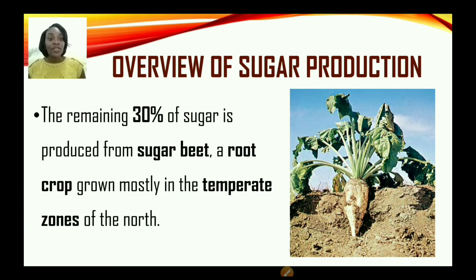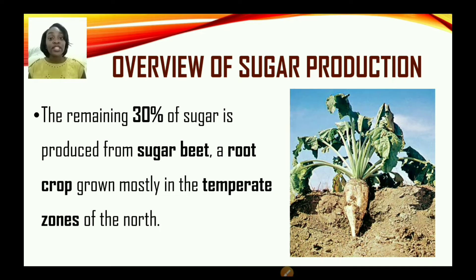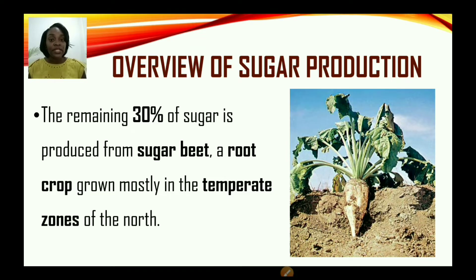The remaining 30% of sugar is produced from sugar beet — a root crop grown mostly in temperate zones of the north. It may look similar to beetroot. When we speak of temperate zones, we are making reference to cold countries, for instance England.